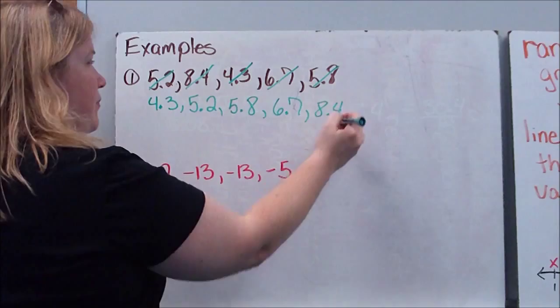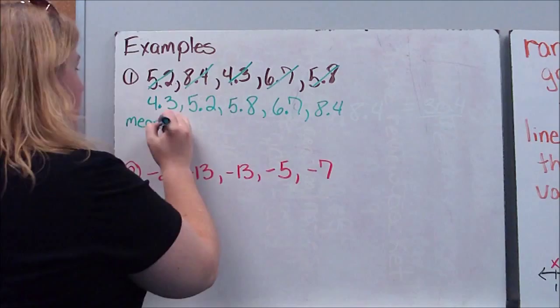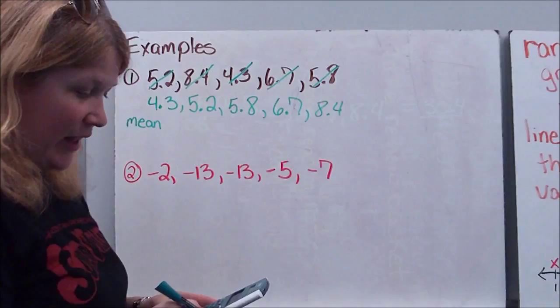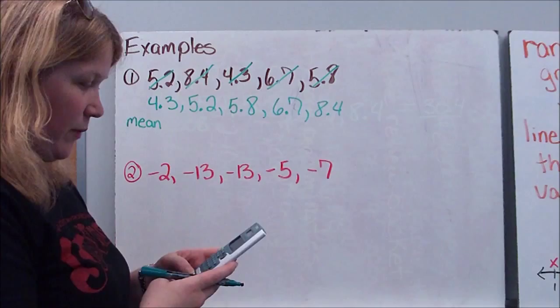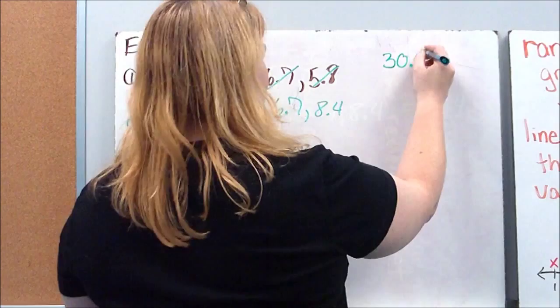So the first thing we'll calculate is our mean, which is our statistical average. So the first thing I'm going to do is I'm going to add up the five numbers I've been given. I'm going to use my calculator just to save us some time. So 4.3 plus 5.2 plus 5.8 plus 6.7 plus 8.4. When I add it all up, I get 30.4. You'll notice that's higher than all of them. That's not our average. We're not done. Remember, that's just the first step.